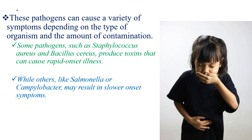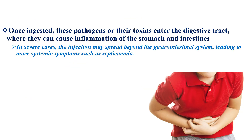These pathogens can cause a variety of symptoms depending on the type of organism and the amount of contamination. Some pathogens such as Staphylococcus produce toxins that can cause rapid onset illness, while others like Salmonella may result in a slower onset of symptoms. Once ingested, these pathogens or their toxins enter the digestive tract, where they can cause inflammation of the stomach and intestine. In severe cases, the infection may spread beyond the GI tract, leading to more systemic symptoms such as septicemia.